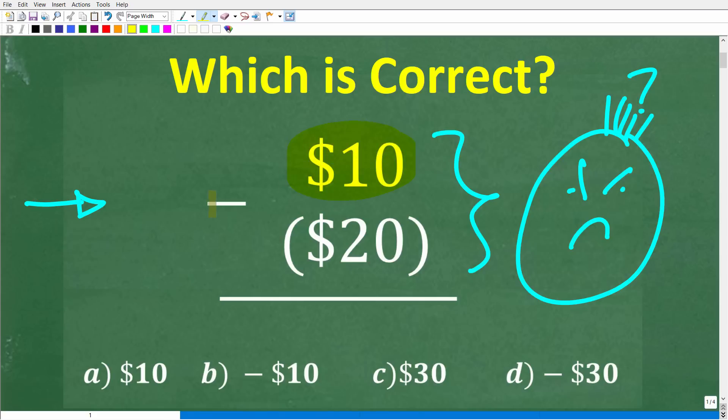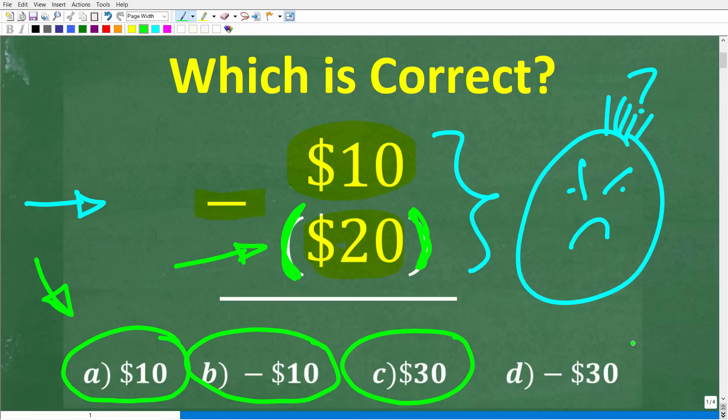So we have $10 minus $20, but the $20 is in parentheses, and in accounting, this means something. All right, so I just gave you a big clue, but the answer is one of these down here. So we do have a multiple choice question, and let's take a look at our options. So A is $10, B is negative $10, C is $30, and D is negative $30.